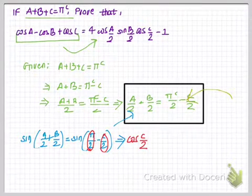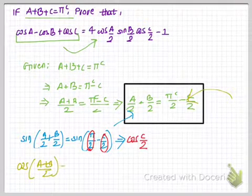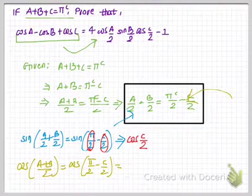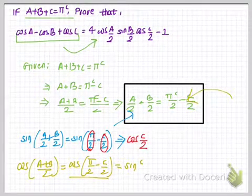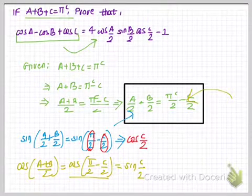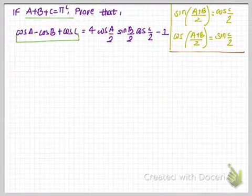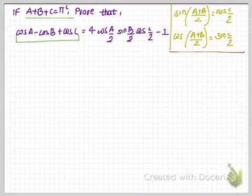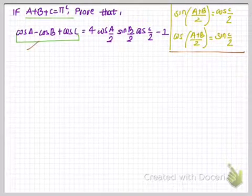Now operating by cosine: cos((A + B)/2) = cos(π/2 − C/2). We know that cos(90° − θ) = sin θ, so with θ = C/2 we get cos((A + B)/2) = sin(C/2). So we have established that sin((A+B)/2) = cos(C/2) and cos((A+B)/2) = sin(C/2).